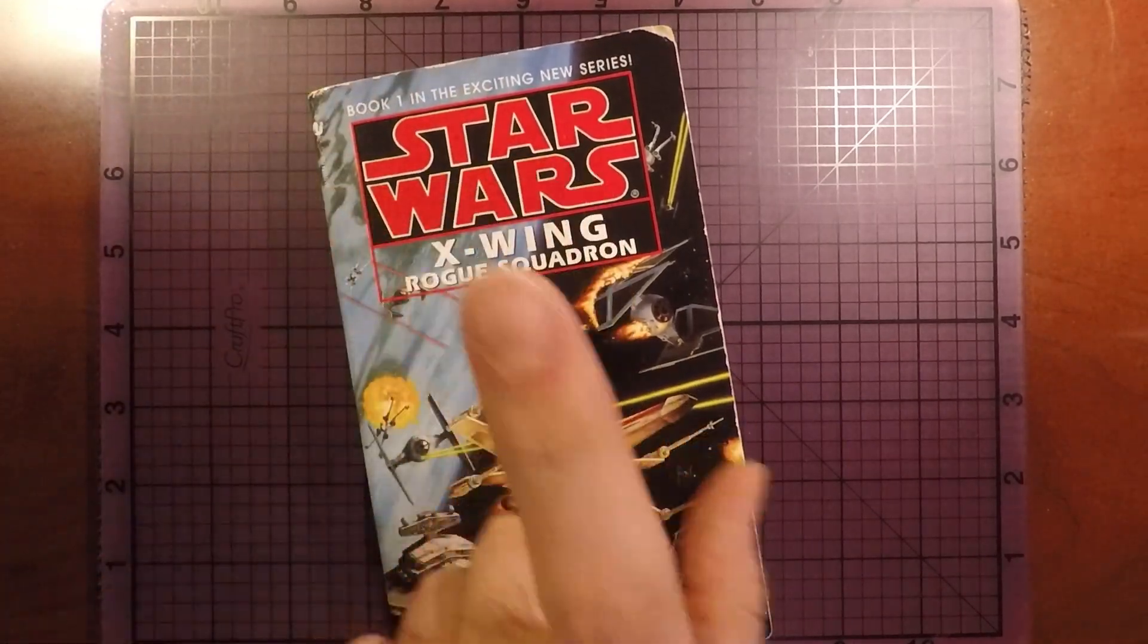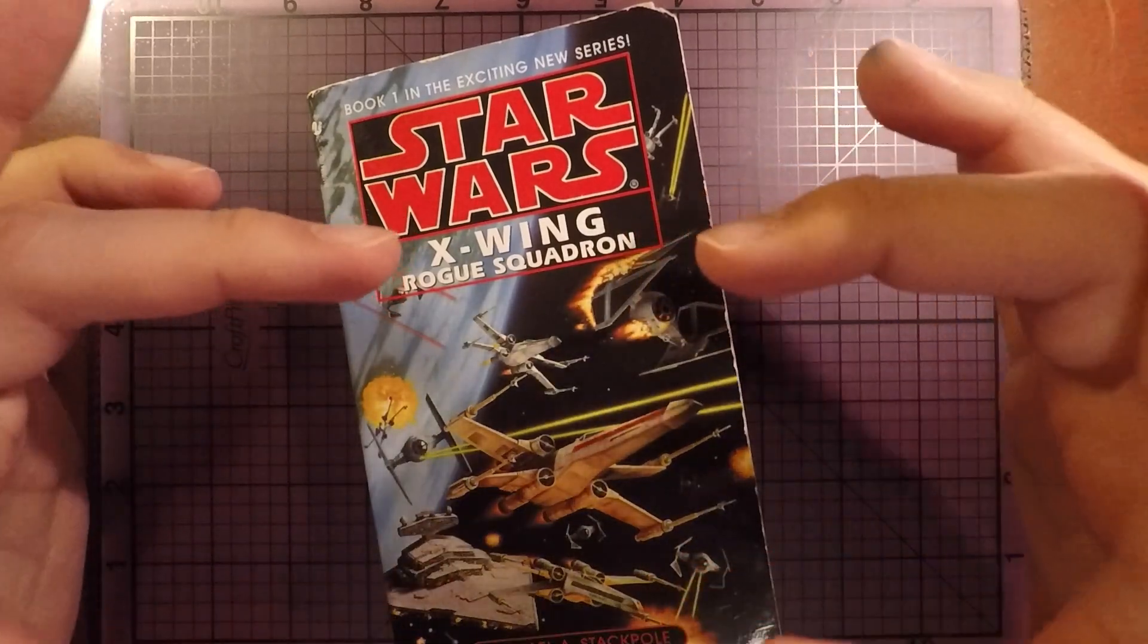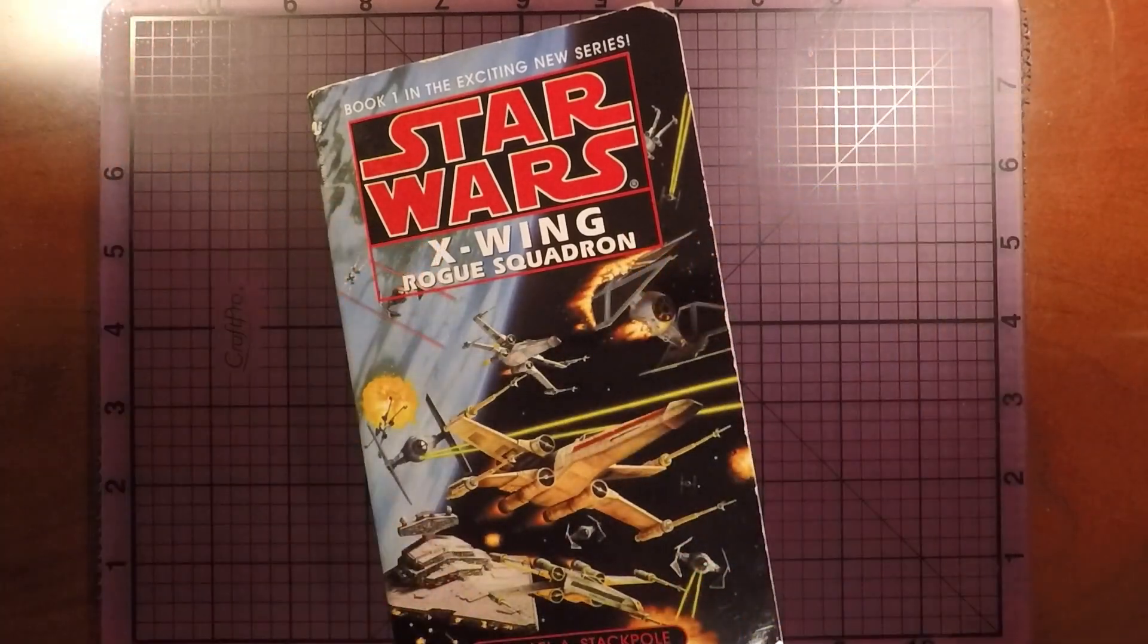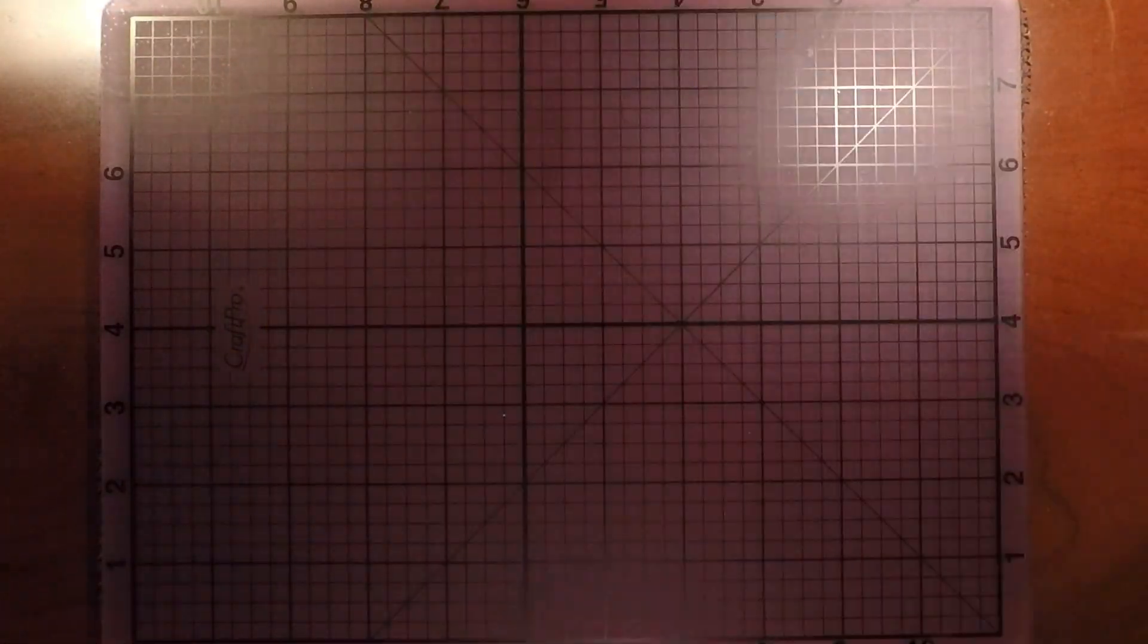We're going to talk about Star Wars X-Wing Rogue Squadron. The title of this video should be something like, How to Make Your Villain Hateable. Although I don't know if I can use those words on YouTube without sinking myself in the algorithm. But that's basically what this is.